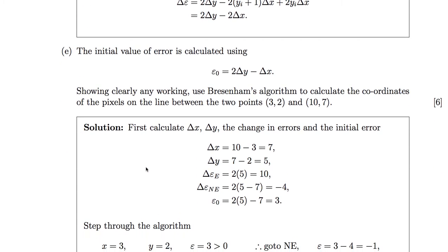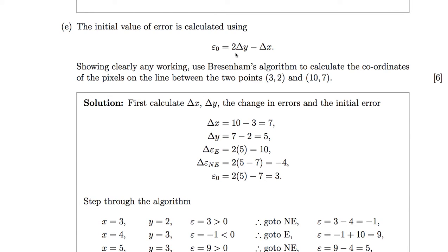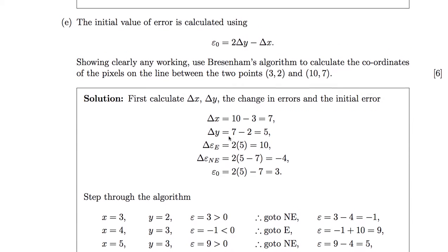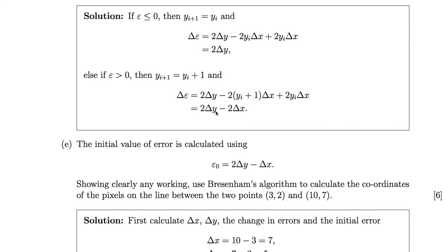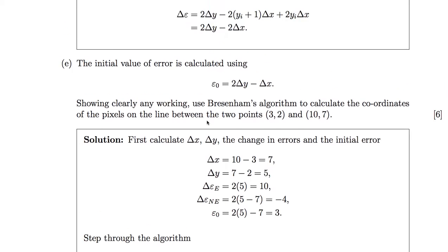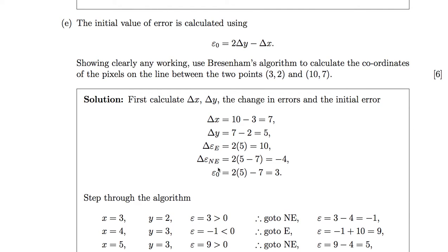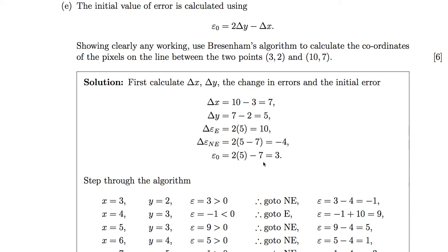Question 5 part e gives the initial error and asks us to use Bresenham's algorithm to draw the line between pixels at (3, 2) and (10, 7). First we calculate Δx, Δy, and the change in errors. Δx is 7, Δy is 5. The change in error going east is 2Δy = 10. The change in error going northeast is 2Δy − 2Δx = −4. The initial error is 2Δy − Δx = 3.